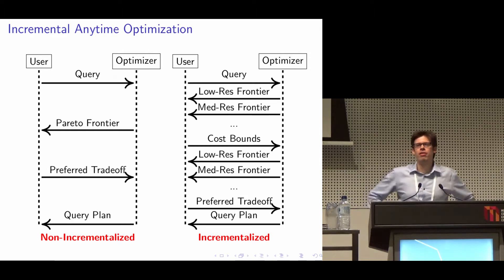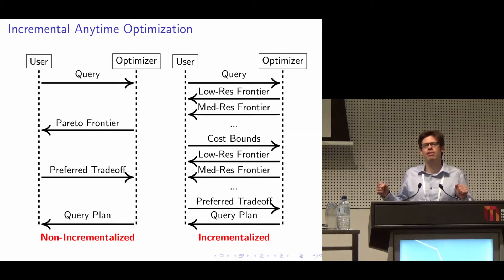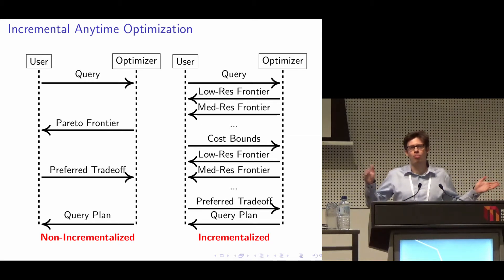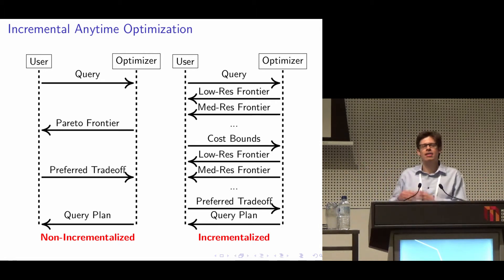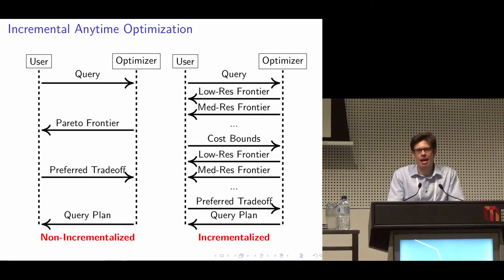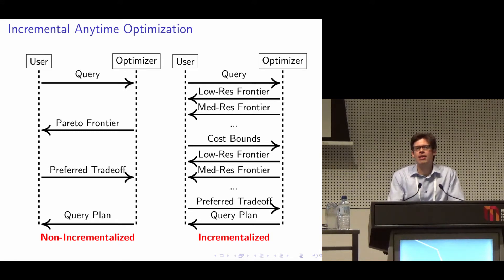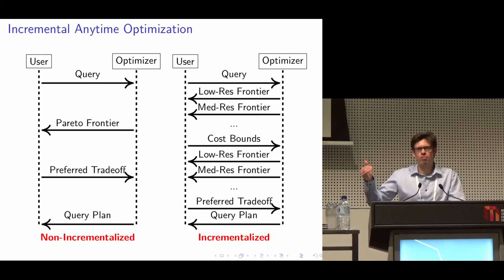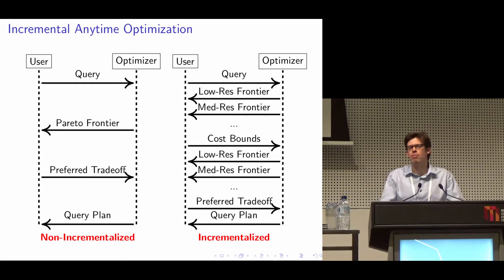For that reason we propose to incrementalize the optimization process. We divide the optimization process into many small incremental steps, and after each step we provide intermediate optimization results to the user. We give users the possibility to dynamically specify cost bounds for the optimizer in order to guide optimization towards parts of the search space that are more interesting. This is an anytime algorithm, since we don't return one approximation of the Pareto frontier but multiple approximations of increasing quality. And it is an incremental algorithm since we take care of avoiding redundant work over multiple approximations.